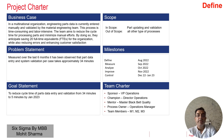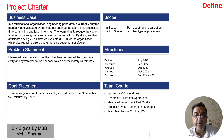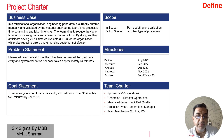Looking at the example: the sponsor is the Vice President of Operations, the champion is the Director of Operations, the mentor is the Master Black Belt Quality, and the process owner is the Operations Manager. They had three team members: M1, M2, and M3.